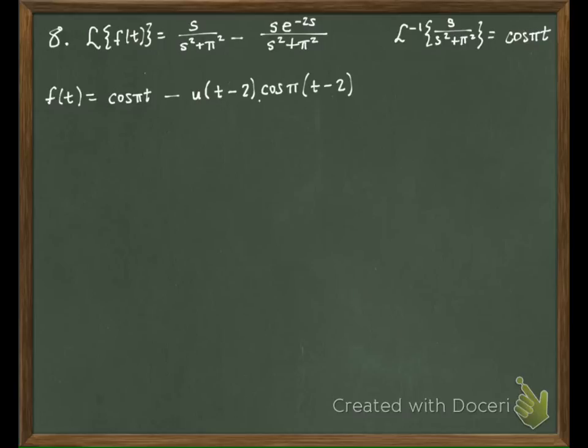Let's deal with this cosine pi of t minus 2. This is the same thing as cosine of pi t minus 2 pi.